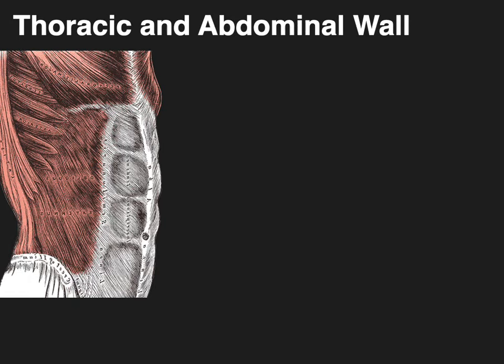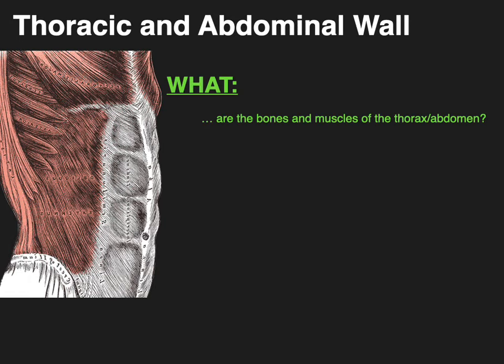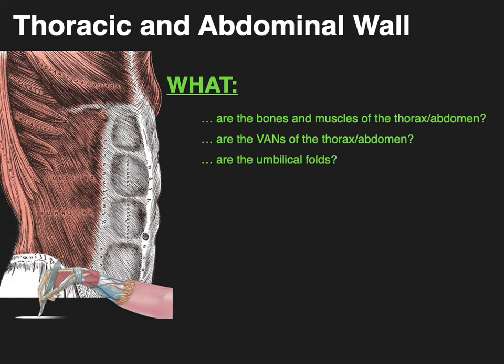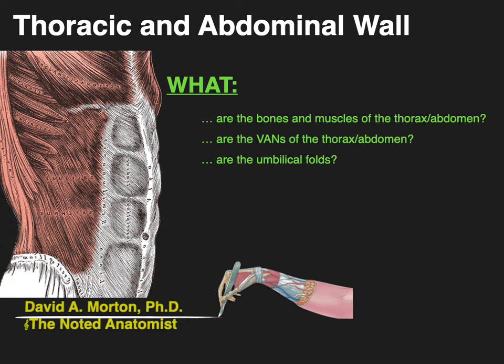We're going to talk about the thoracic and abdominal wall and answer the questions: what are the bones and muscles of the thorax and abdomen, what are the veins, arteries, and nerves of the thorax and abdomen, and what are the umbilical folds. My name is Dr. Morton and I'm the Noted Anatomist.